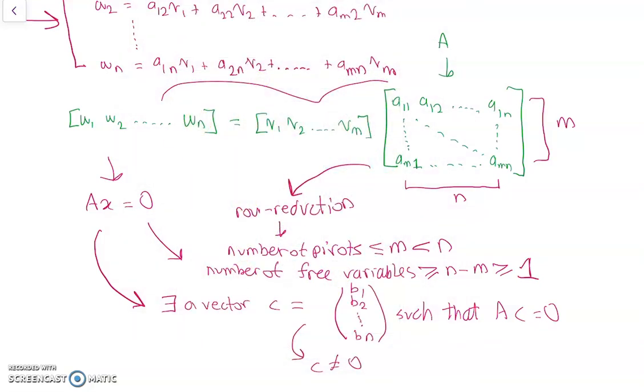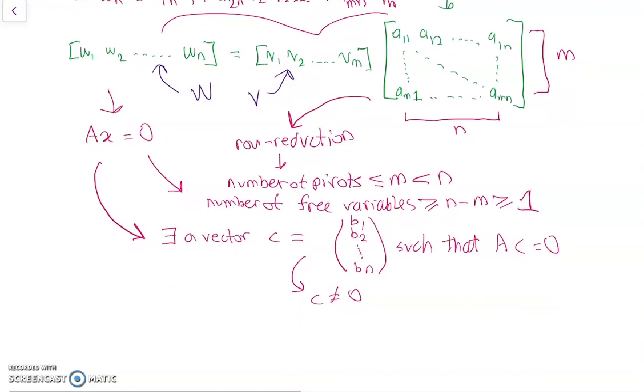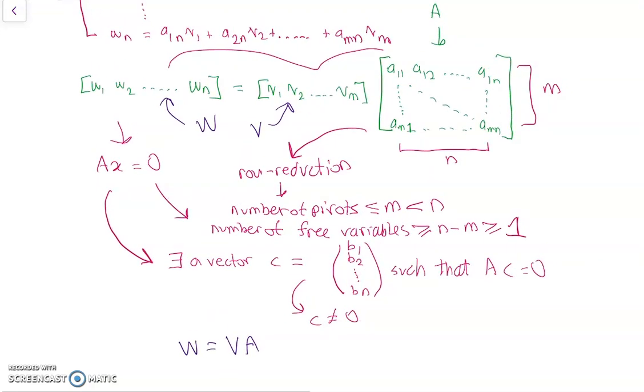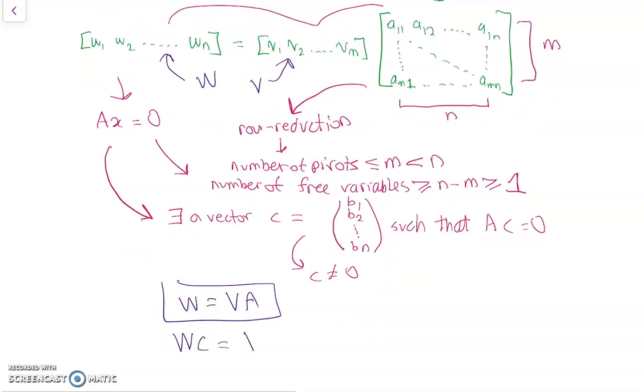Okay. So now let's say this matrix is W, this matrix is V. So we have W equals VA. So now, what happens if I multiply both sides of this equation by C? So we have WC is equal to VAC. And using associativity of matrix multiplication, we can write this as V times AC, and AC is equal to 0, which means we have V times the 0 vector.